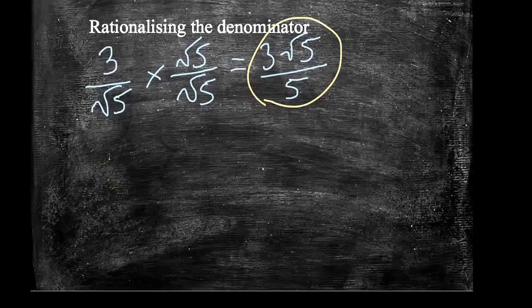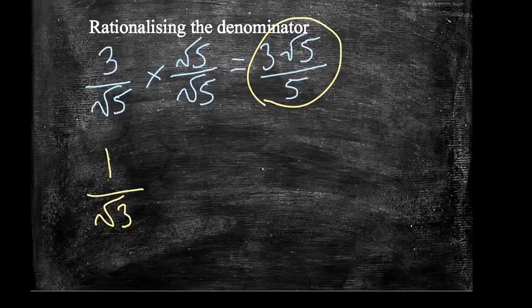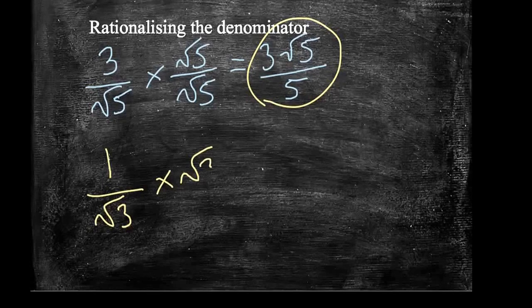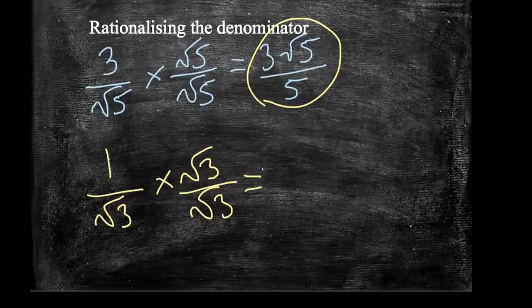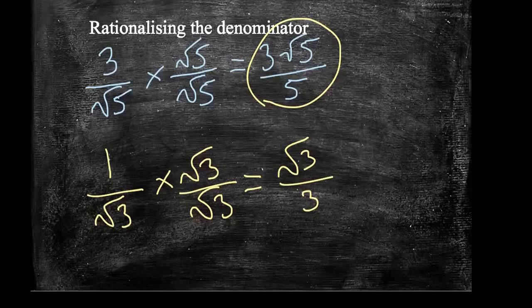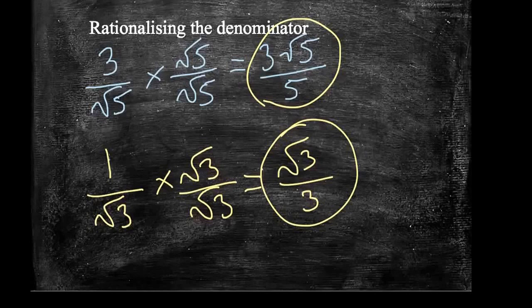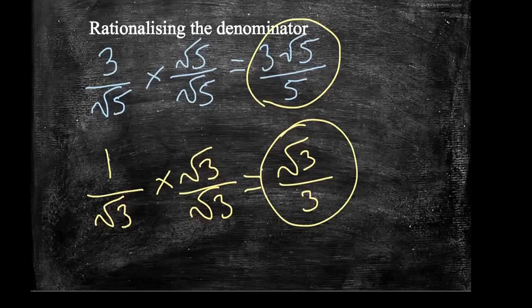What if we have 1 over root 3? Do the same thing as before — multiply top and bottom by root 3 over root 3. Remember, root 3 divided by root 3 is equivalent to 1, so we're not changing the size of the fraction, we're just writing it in a different way. 1 times root 3 is root 3, and root 3 times root 3 is 3. So 1 over root 3 is equivalent to root 3 over 3. This is rationalising the denominator. What you might want to do this for is when you're starting to add together various fractions — you might be able to cancel something out. Fundamentally, we're trying to get a whole number as your denominator rather than a surd.